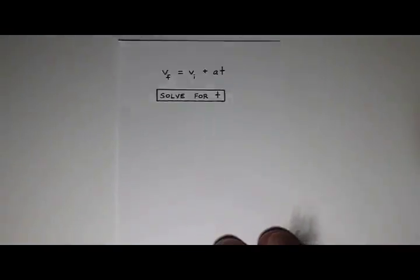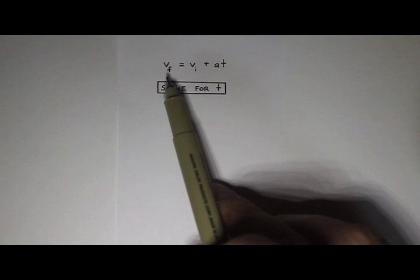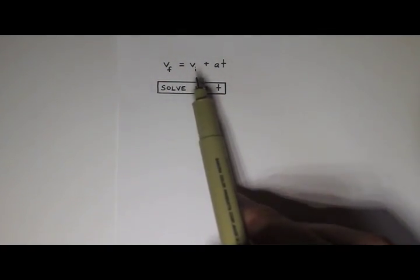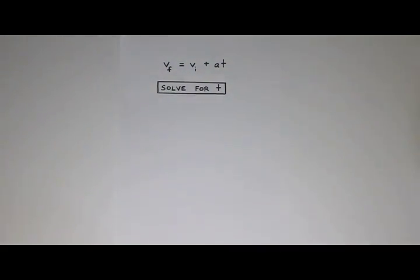Okay, let's try another one. So that one was pretty simple. How about something like this? So this is v final, that's what that little f means, equals v initial, that's what that little i means, plus a times t. And I want to solve this for t.